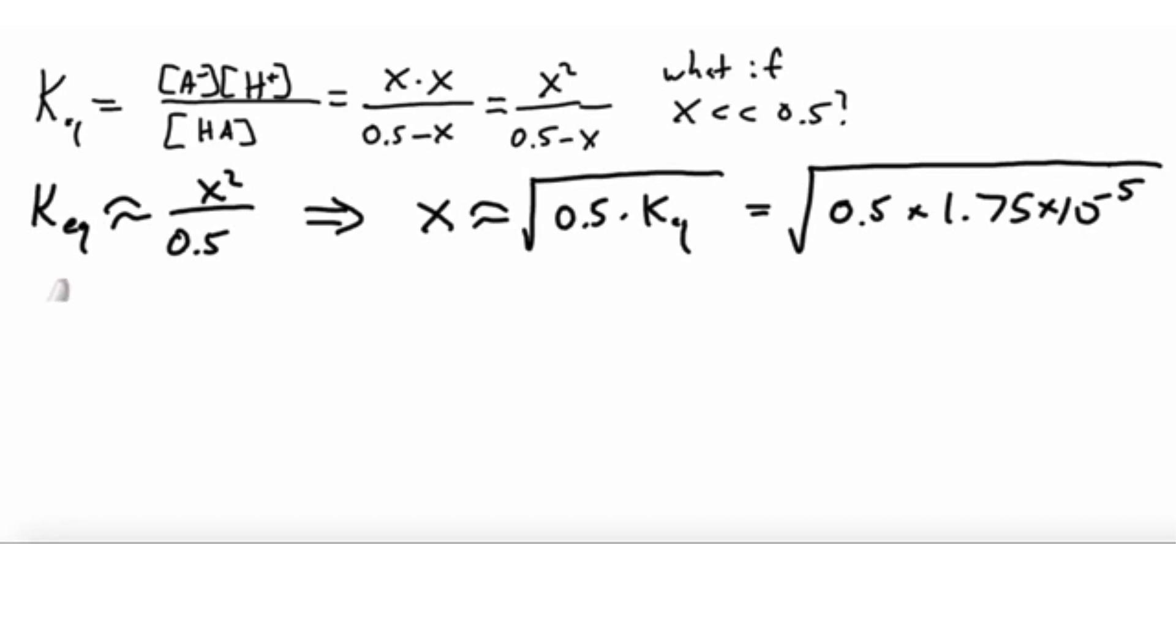This is called x1, our first approximation. Taking the square root of 0.5 times Ka gives x1 equals 2.96 times 10^-3. Were we justified in saying this is much less than 0.5? Yes, 0.003 is indeed much less than 0.5.